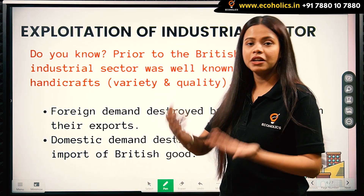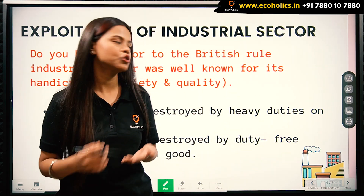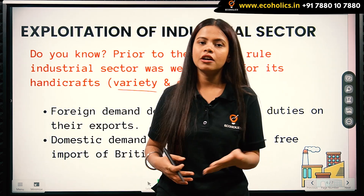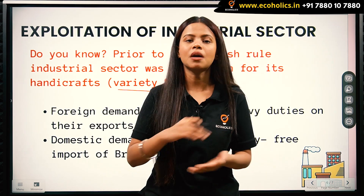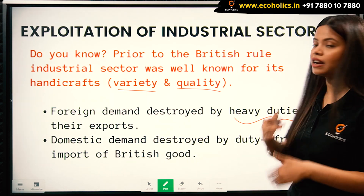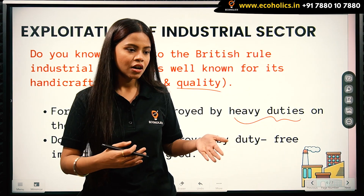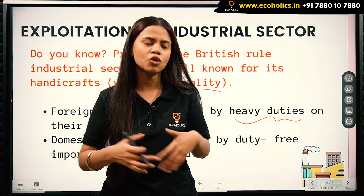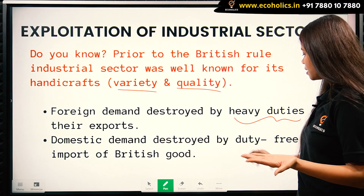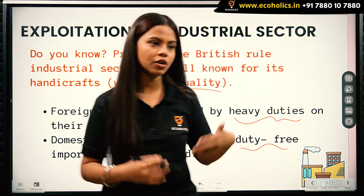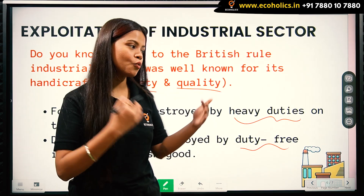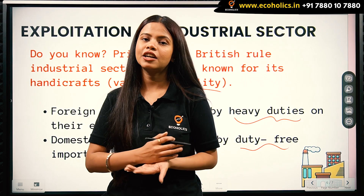Before the British came, India's handicraft market was very famous, known for its variety and quality. But under colonial rule, the handicraft market was completely destroyed. Foreign demand for Indian handicrafts was destroyed by putting heavy duties on exports. At the same time, domestic demand was destroyed by the duty-free import of British goods, making it very easy to import foreign goods but very difficult to export Indian goods.